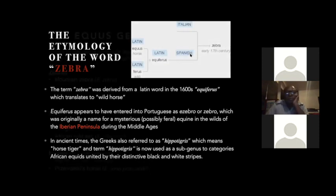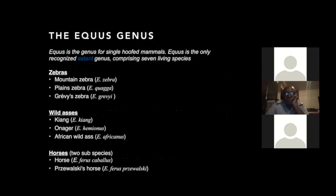The equus genus is the genus for single-hooved mammals — donkeys, horses, zebras and the like. It is the only recognized extant genus, consisting of seven different species split into three subgenuses. The first subgenus is Hippotigris, which contains the zebras, and zebras are further split into three species.